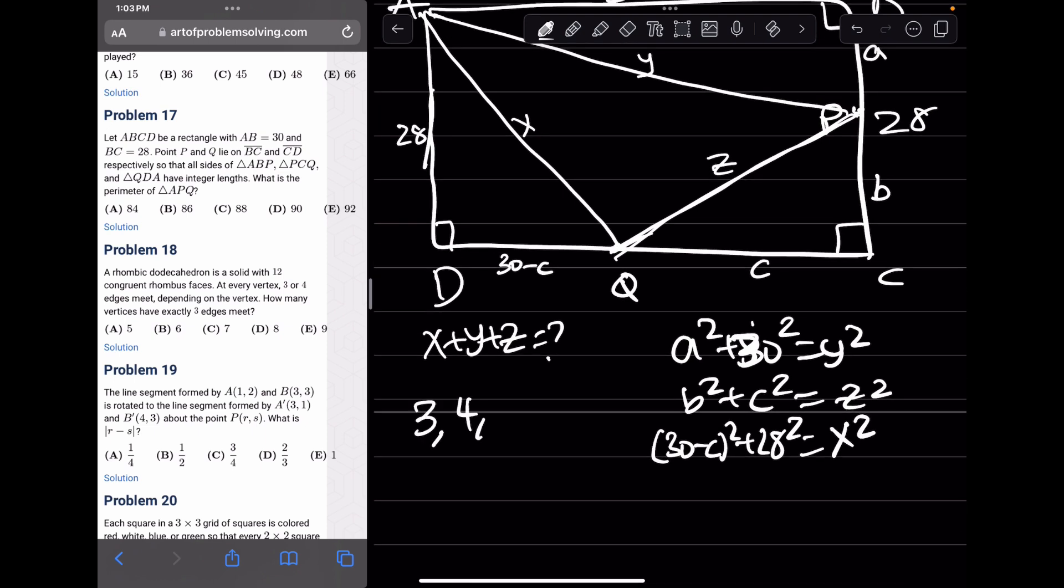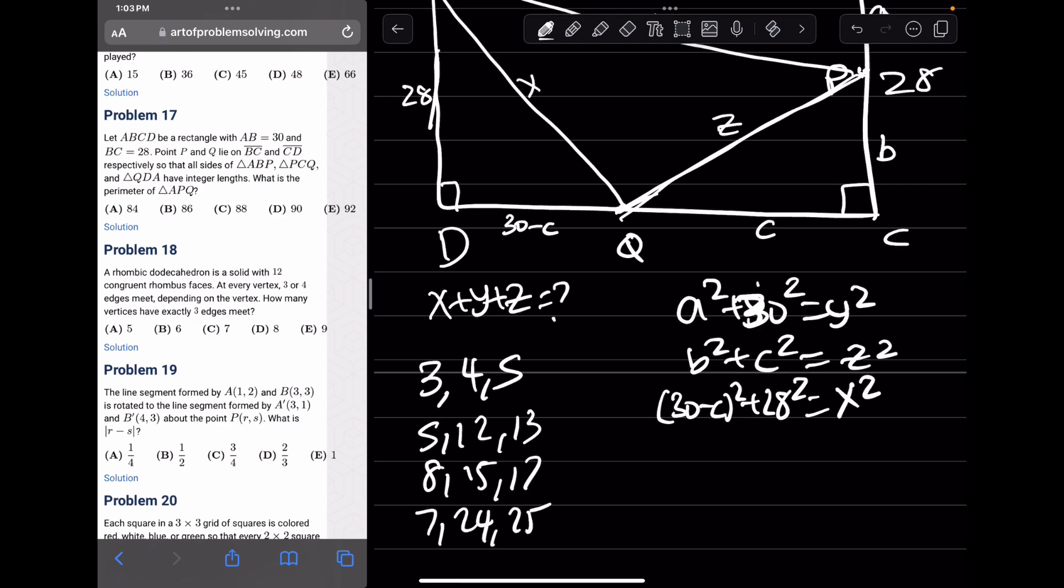So for Pythagorean triples, we have 3, 4, 5, 5, 12, 13, 8, 15, 17, and 7, 24, 25. And we can keep on going down.